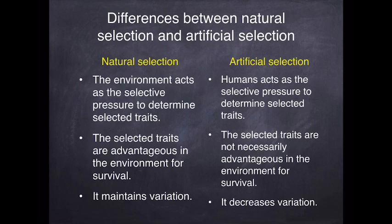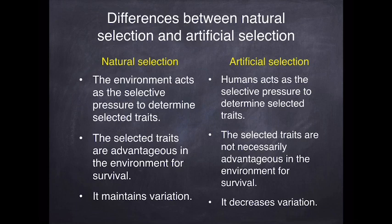Natural selection maintains variation. The wider the variation in a population, the better the chances of survival — if some individuals have a gene making them immune to a particular virus or able to survive drought, the population as a whole survives. So variation is very important, and natural selection maintains it. With artificial selection, because of linked genes, variation ends up decreasing — individuals become more and more similar. When breeding dogs, horses, or cats for show, the closer they are to the perfect archetype, the better, so we see a clear decrease in variation under artificial selection.